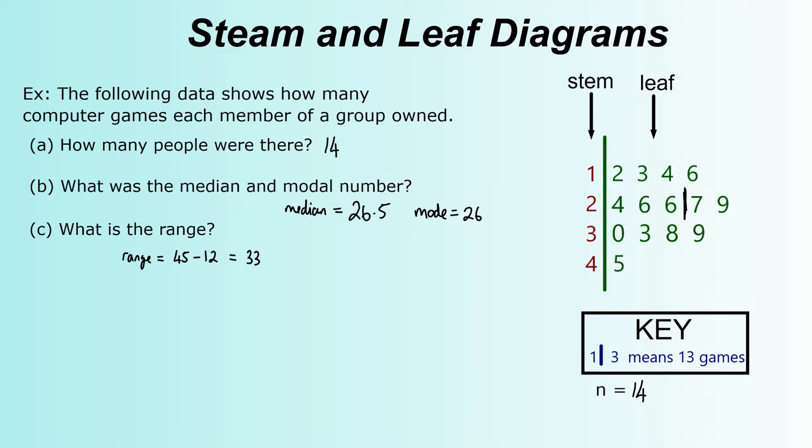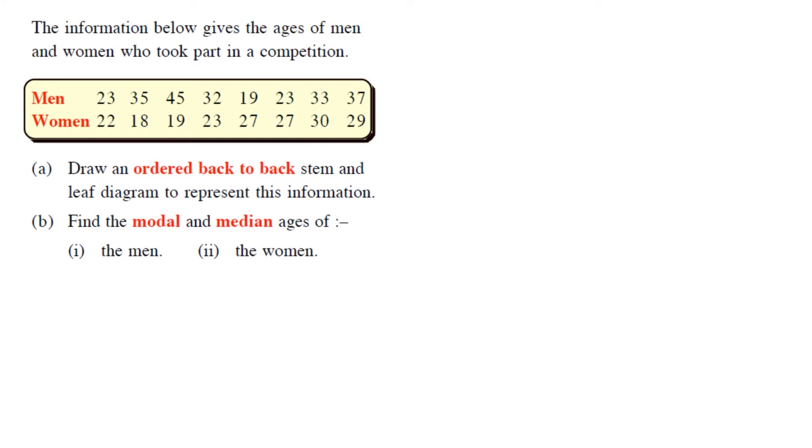So that's your basic idea of how you read a stem-and-leaf diagram. Remember that key, and remember the n value. It's really important, because those are the parts people forget about. I guarantee people forget about them more than anything else. So what we're going to do now is draw our own stem-and-leaf diagram, but we're going to draw a back-to-back stem-and-leaf diagram.